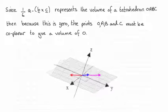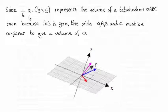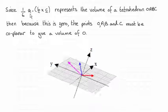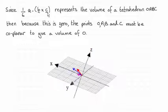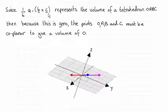Hi there. Now we've got to interpret this result then, the fact that 1/6 A dot B crossed with C in the previous part equals zero.